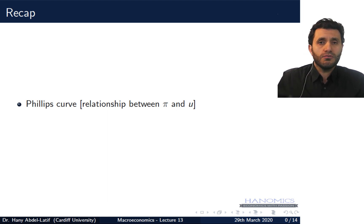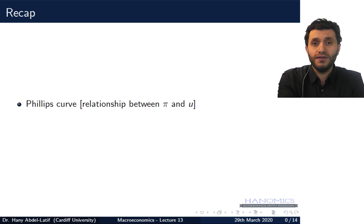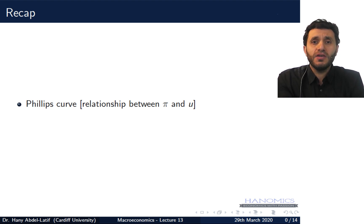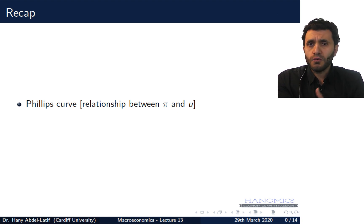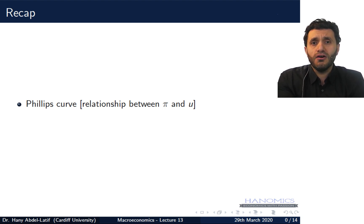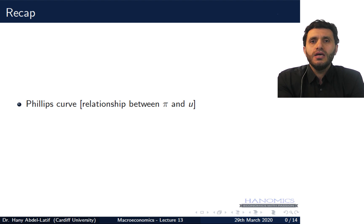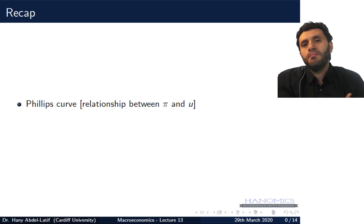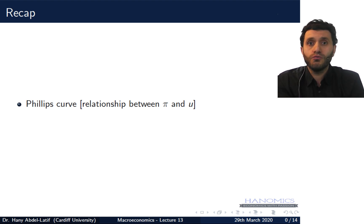We looked back at the original paper, which was published in 1958, and we explained how this relationship — known as the Phillips curve — became very popular in the macroeconomics policy-making framework. We also showed how this relationship was questioned during the 1970s with the oil price shocks, and how our understanding changes once we include expectations and account for supply shocks. That's what we covered last lecture.